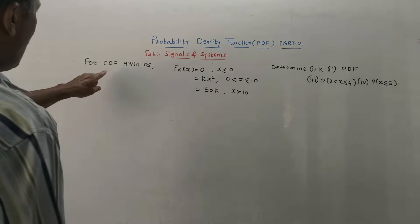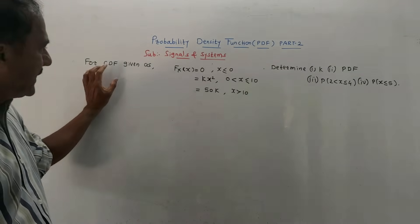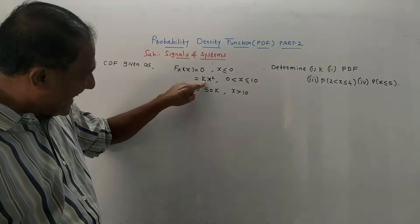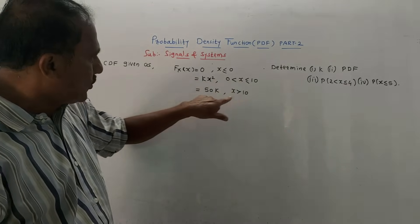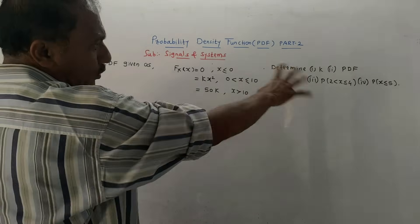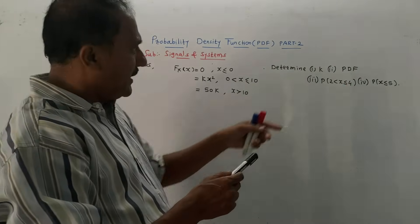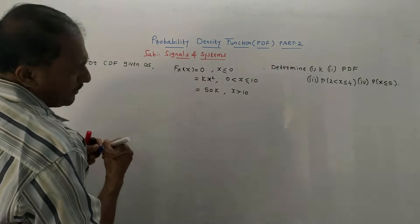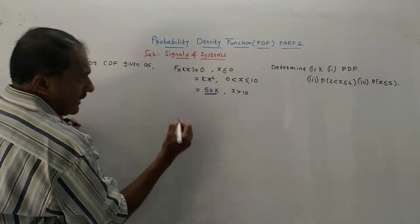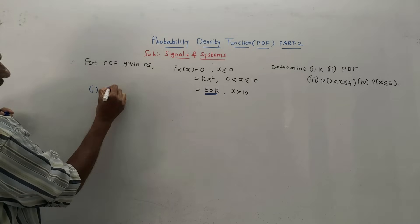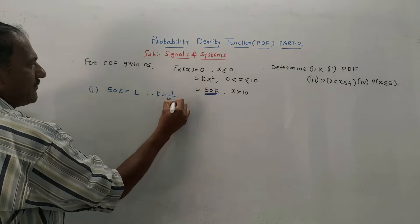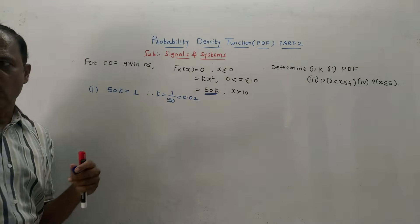Next numerical. For a CDF given as: capital F(x) equals 0 for X less than or equals to 0; K·X² when X is between 0 to 10; and 50K for X greater than 10. Everything is similar to the last sum, but values are different. To find K, equate the last constant term to 1: 50K equals 1, therefore K equals 1/50, that is 0.02.